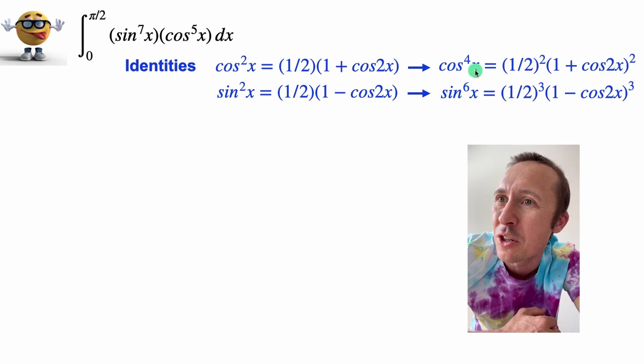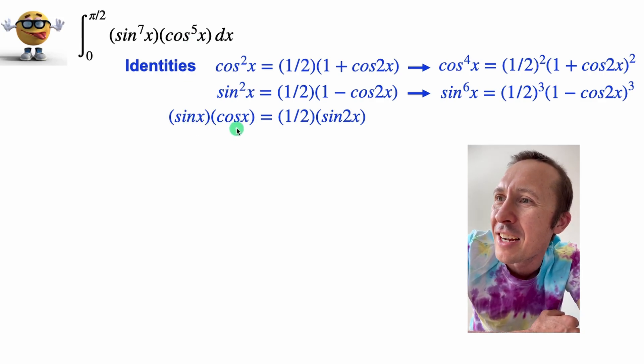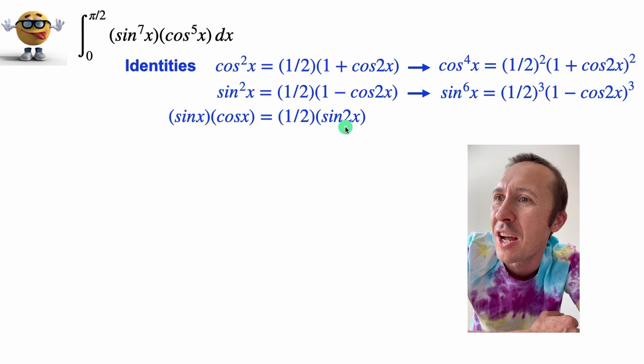Sine to the power of six equals one half cubed times one minus cos 2x cubed. So this gives us cos⁴ and this gives us sin⁶. But there's a leftover sine and a leftover cos, right?